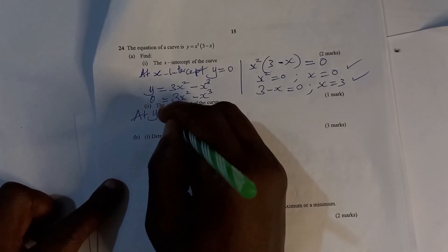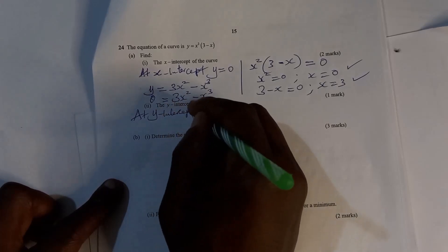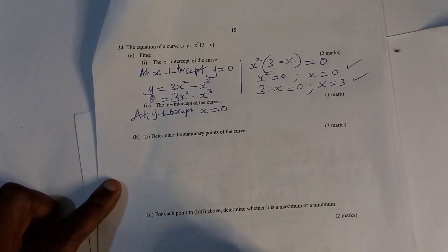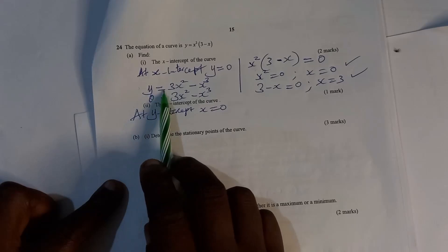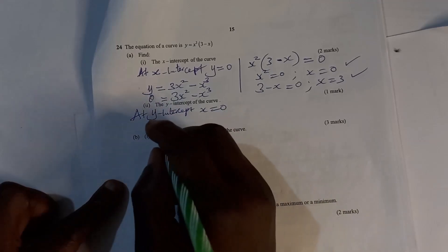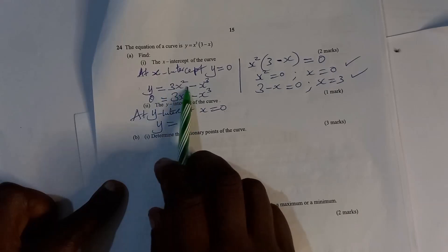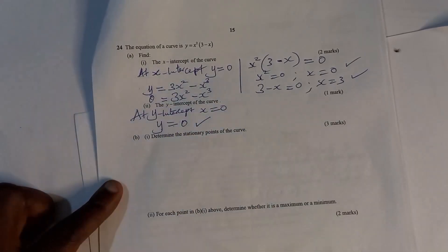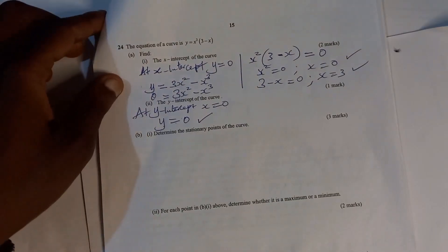Now at the y-intercept, x equals 0. We take the function y equals 3x squared minus x cubed and substitute x with 0. Everything becomes 0, so therefore the y-intercept of the curve is y equals 0.